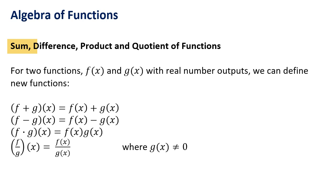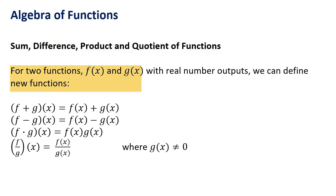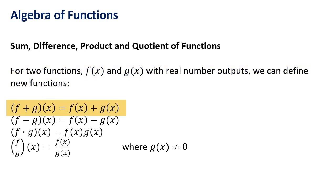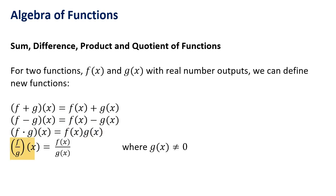The Algebra of Functions: the sum, the difference, the product, and the quotient of functions. For two functions f and g with real number outputs, we can define new functions: f plus g equals f plus g, f minus g equals f minus g, f times g is f multiplied by g, and f divided by g is f divided by g, where g doesn't equal zero.